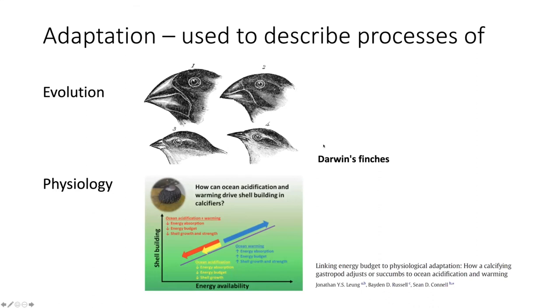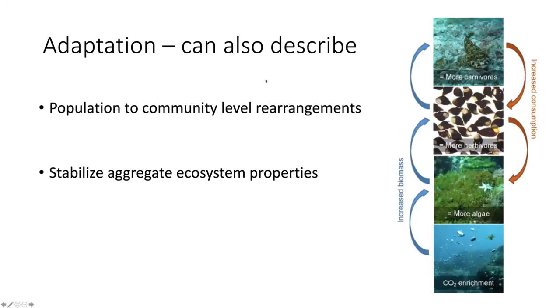We've used this term adaptation to describe evolution. We do it in our lab to describe physiological changes to underpin stasis. But we don't see people doing it yet. Think about communities and populations and their rearrangements that might stabilize ecosystem properties. So you can imagine as CO2 as an energy source propagates up a food web to the primary producers, to the herbivores, to their predators, and how their consumption might increase as a consequence. We might get some kind of stability.